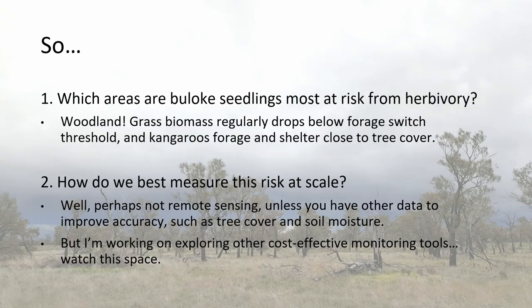Going back to those two questions: the areas where seedlings are most at risk of being browsed? Woodlands — that's the short answer. We saw that grass biomass will pretty much always fall below that threshold in summer and late summer and autumn, and kangaroos prefer these areas because of the availability of grass in nearby open areas while staying close to shelter.